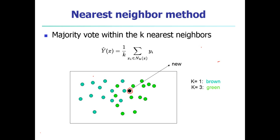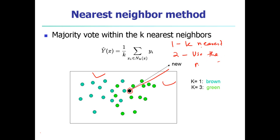We have got two types of data - the brown circle represents one type of data and the green circle represents another type of data. Now given a data point, how do we know which group this data point belongs to? We find it out in two ways: first finding out k nearest neighbors, and the second is to use what you call the majority count.